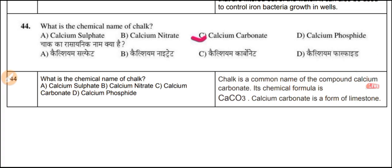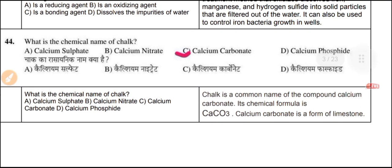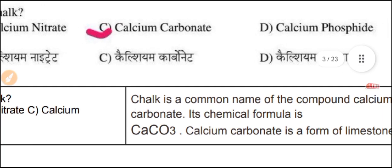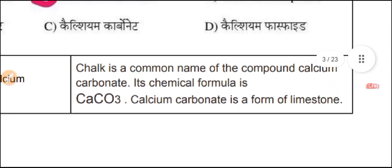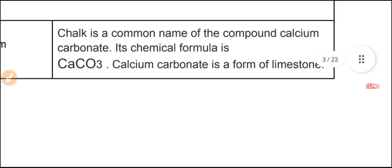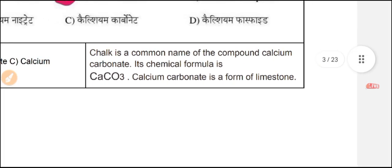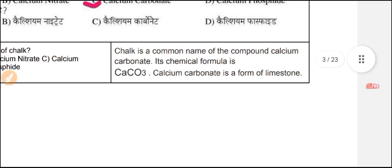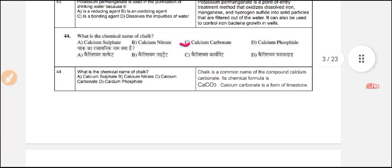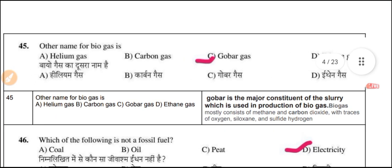Question 44: What is the chemical name of chalk — the material teachers write with on a blackboard? Chalk's chemical name is calcium carbonate. Chalk is a common name for the compound calcium carbonate, with the chemical formula CaCO₃. It is calcium carbonate in the form of limestone.